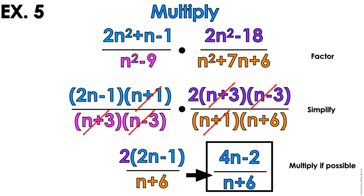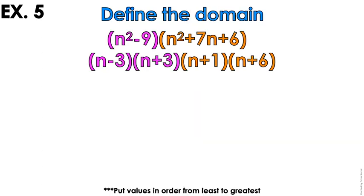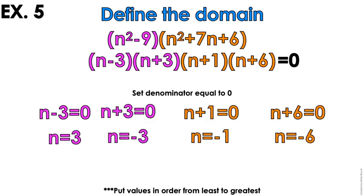You're going to take your denominator, which is the pink part and the orange part, the factored form of your denominator, and set it equal to 0. So n is all real numbers except for negative 6, negative 3, negative 1, and 3.